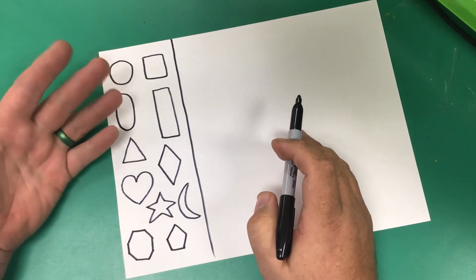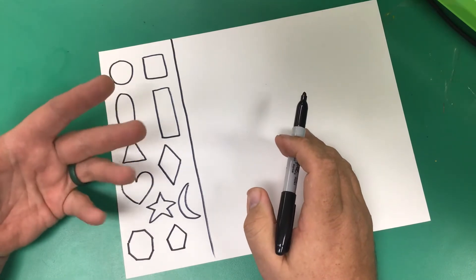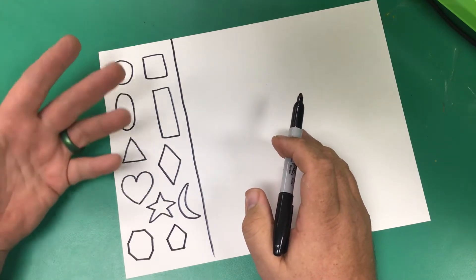Okay. Those are the shapes that have names. We just name them like we just did: circle, square, rectangle.